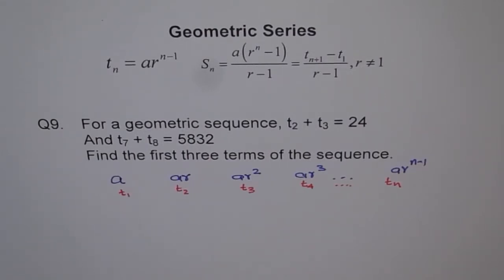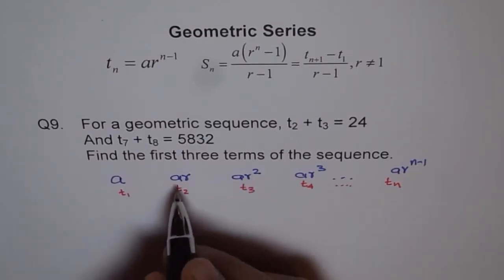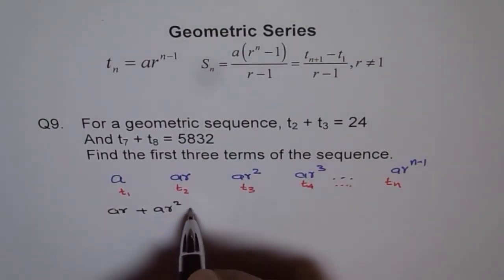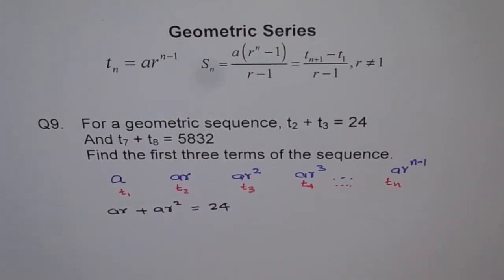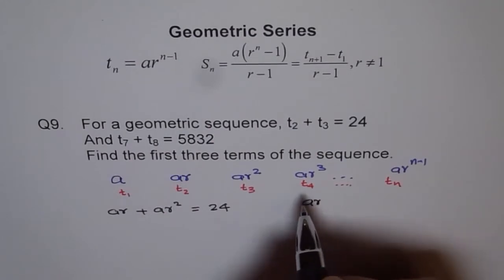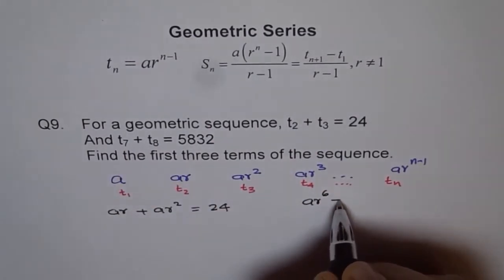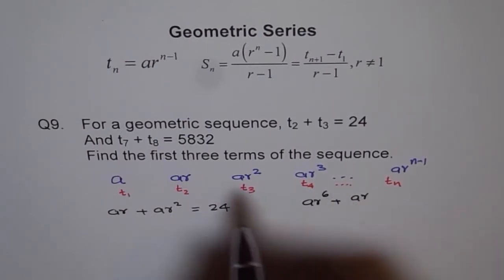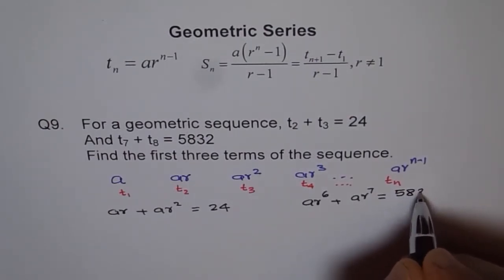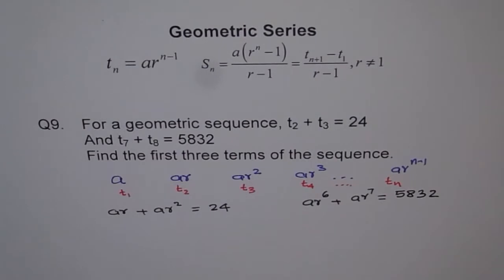Now, let's try to do our question. The question says that t2 and t3 are 24. So what is t2 for us? t2 is basically a r, t3 is a r square. So a r plus a r square is given as equal to 24. Similarly, t7 and t8, their sum is 5832. So t7 should be a r to the power of 6, plus t8 will be a r to the power of 7, and this is equal to 5832.